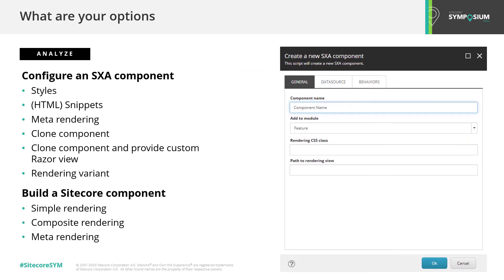Should you choose to deliver a new component, we also give you options. You can clone an existing component — perhaps because your editors are used to specific names or your list of variants is becoming overwhelming — create a new one from prefabricated SXA behaviors, or create one from scratch. Every SXA component should still give the editor the option to apply styles, pick a variant if applicable, or be composable. Consider what is best for the scenario and what your marketers are used to.